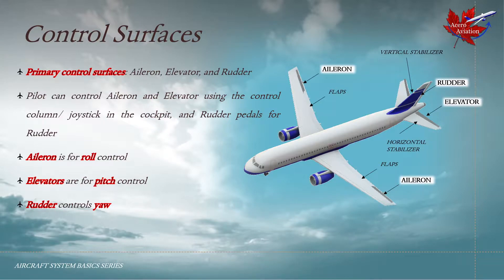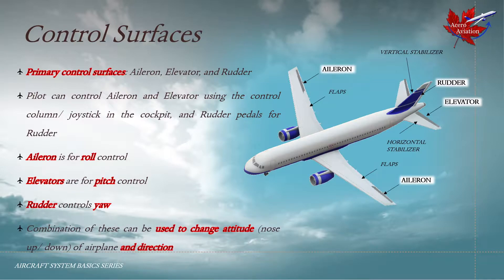There are also secondary control surfaces such as flaps and slats, spoilers and speed brakes, and trimming devices. Secondary flight controls are not necessarily present on all aircraft. A combination of movement of the control surfaces is used to change the attitude and direction of the airplane's movement.